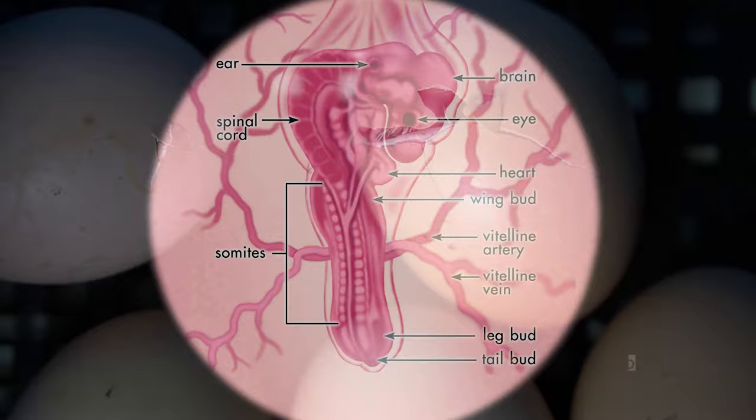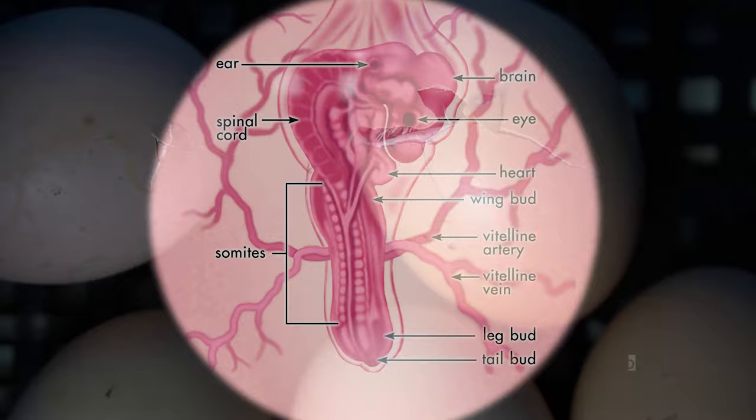It will take about 21 days for a chick to fully develop and then hatch from its egg. It is amazing how a single cell can develop into a chicken in less than a month. Many other animals develop in a similar manner from a single cell to an embryo to a fully developed animal. In our next lab, we will begin an introduction to anatomy and dissection. At this time, proceed with the corresponding activities.